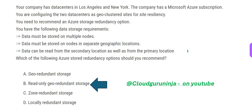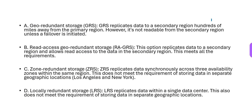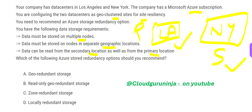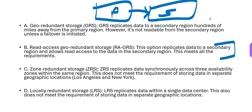The answer here is Read-Only Geo-Redundant Storage (RA-GRS). This replicates data to a secondary region, so you have a primary region and a secondary region, and replication always happens to the secondary. That is why you can read from the primary and also read from the secondary. It meets all the requirements: data stored on multiple nodes, and nodes are in separate geographical locations because primary and secondary servers are in different locations.